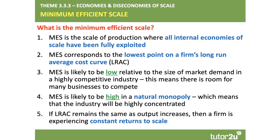If the MES is reached quickly — if the MES is low relative to the size of the market — there'll typically be many firms able to reach that point, giving a highly fragmented, highly competitive, low-concentrated market. On the other hand, if the minimum efficient scale is high, with big scale economies to be exploited relative to the size of the market, we may actually have a natural monopoly where only one firm is fully able to exploit the scale economies, typically leading to a highly concentrated market.